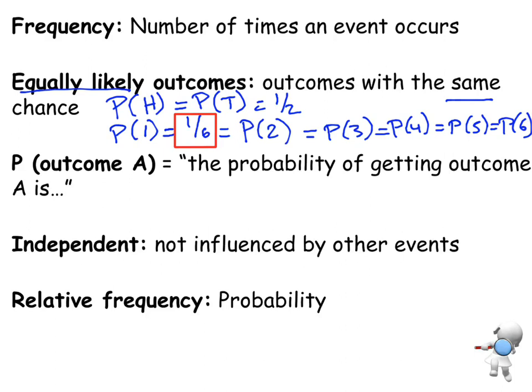And the next one is just a little bit of notation. We'll often write P, and then in brackets, we'll put what it is that the outcome that we're looking for is.